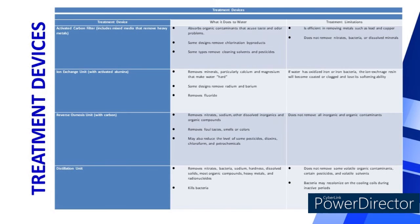Treatment Devices: Activated carbon filter — includes mixed media that removes heavy metals. It absorbs organic contaminants that cause taste and odor problems, some designs remove chlorination byproducts, and it sometimes removes cleaning solvents and pesticides. Limitation: efficient in removing metals such as lead and copper, but does not remove nitrates, bacteria, or dissolved minerals. Ion exchange unit / Activated alumina — removes minerals, particularly calcium and magnesium that make water hard; some designs remove radium and barium; and it removes fluoride.